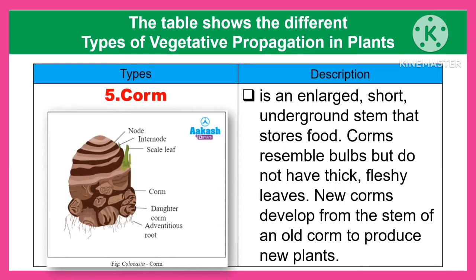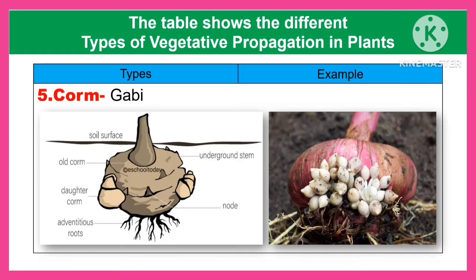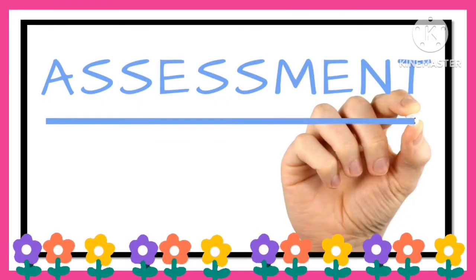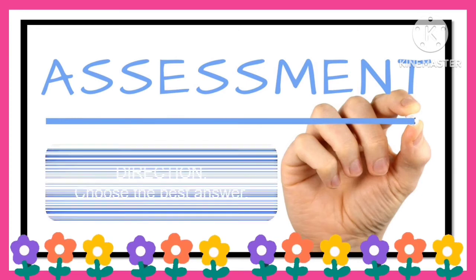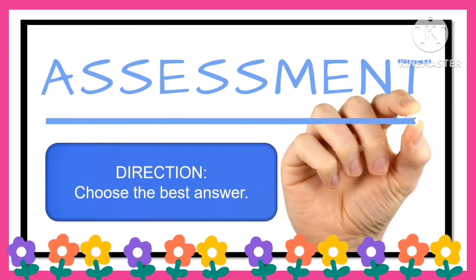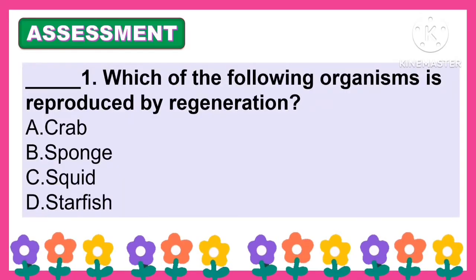Another type of vegetative propagation in plants is the corm. The corm is an enlarged, short, underground stem that stores food. Corms resemble bulbs but do not have thick or fleshy leaves. New corms develop from the stem of the old corm to produce a new plant.